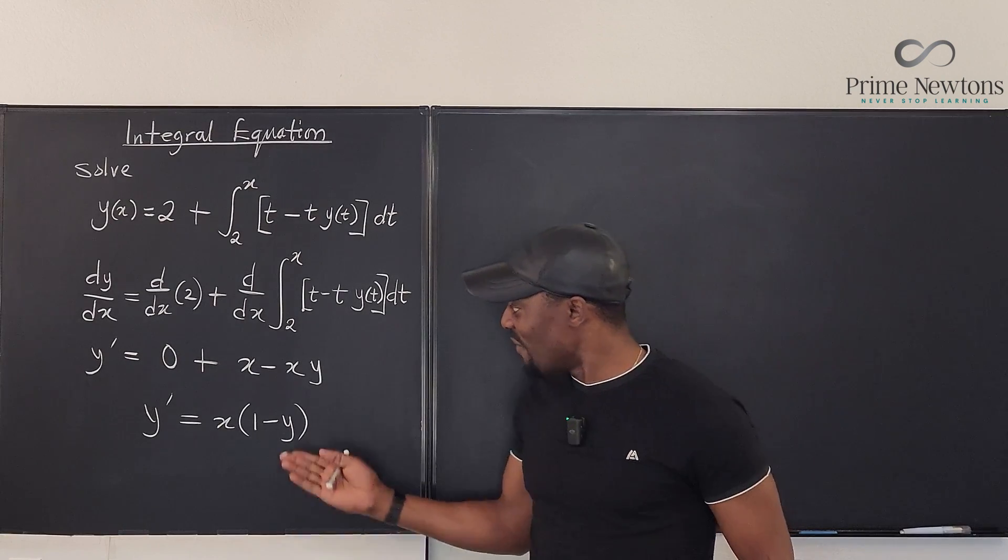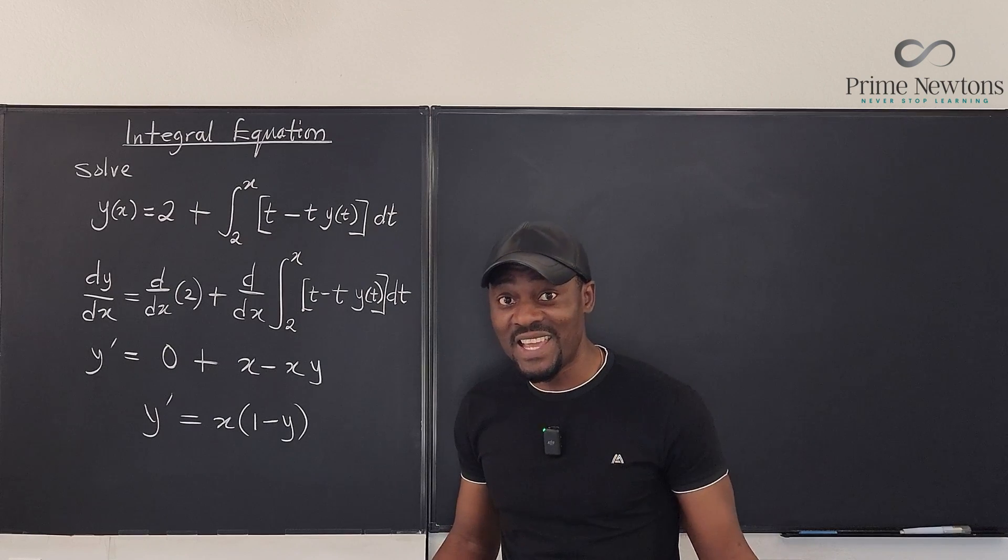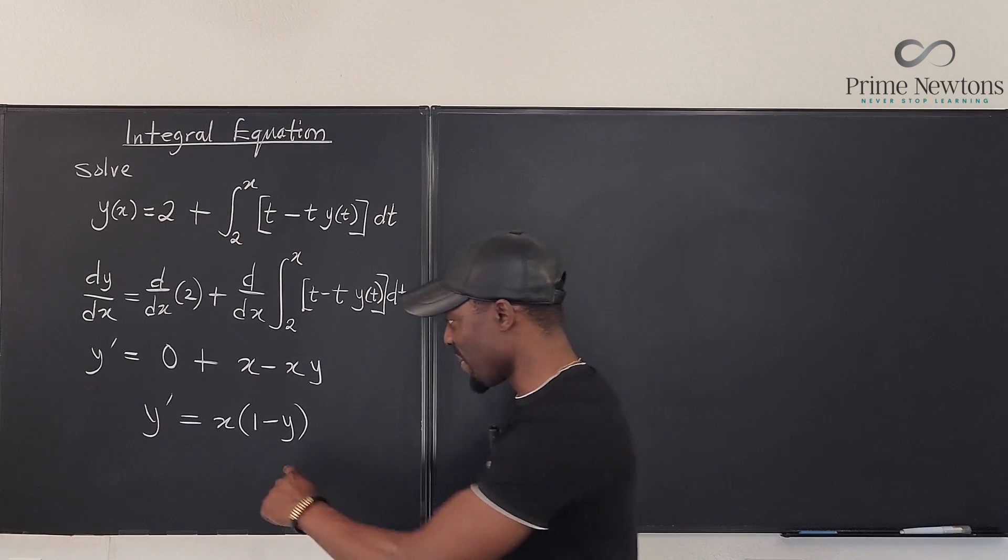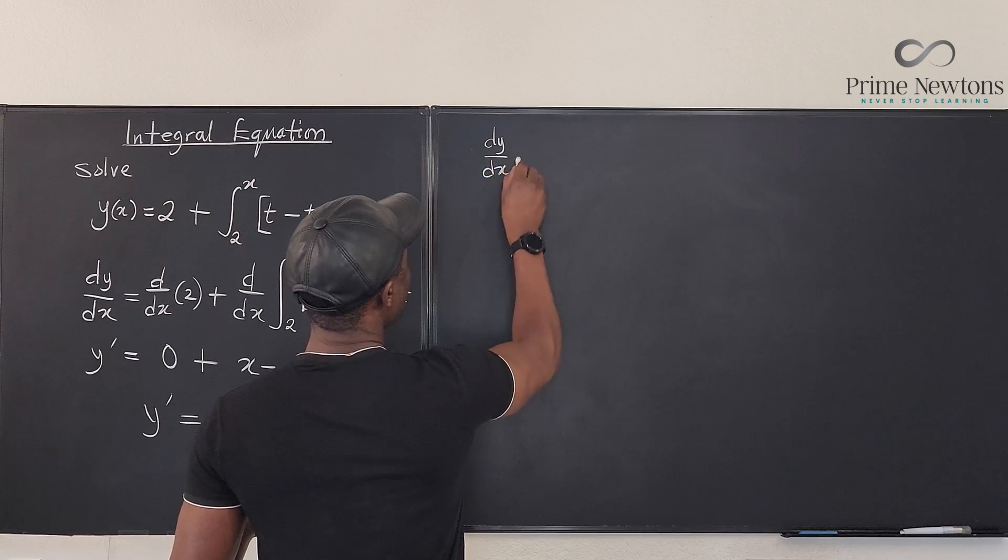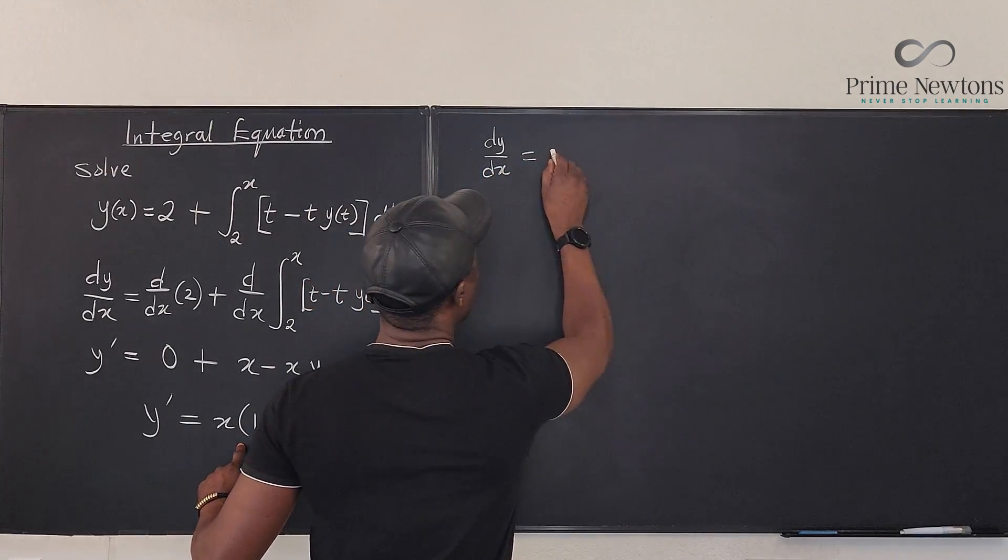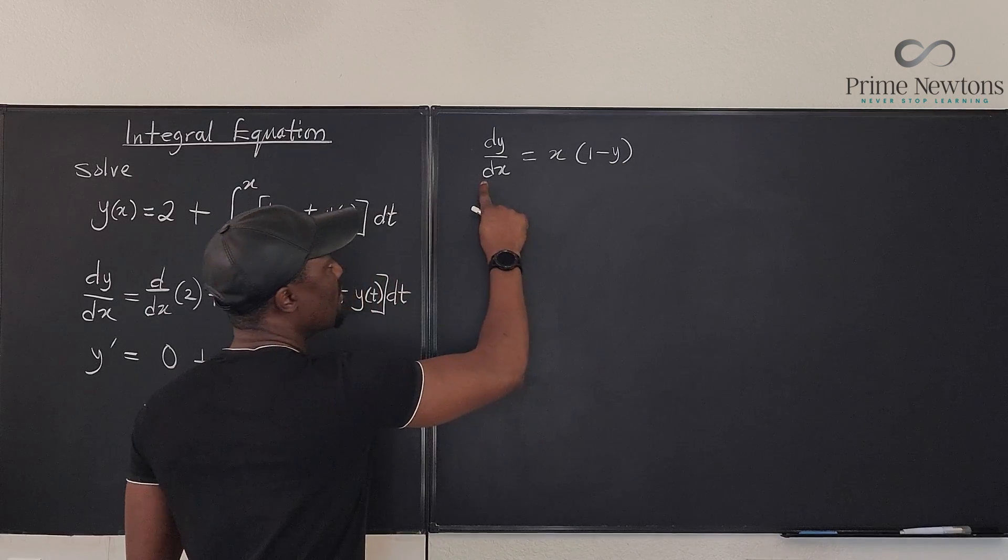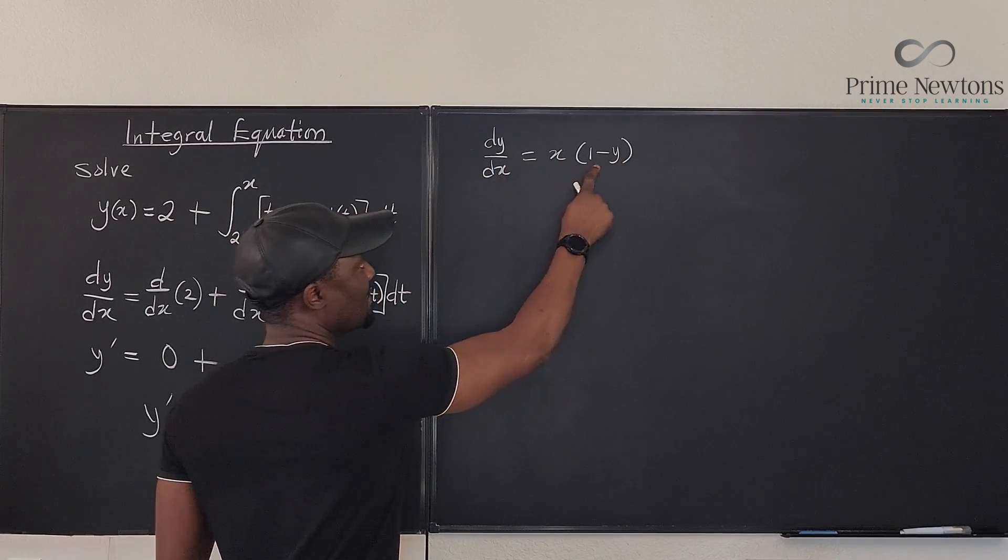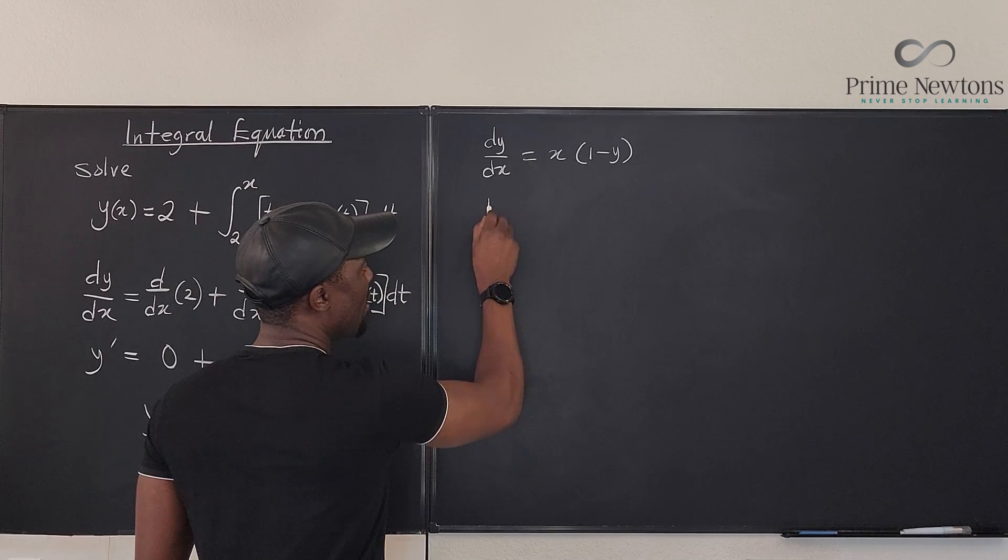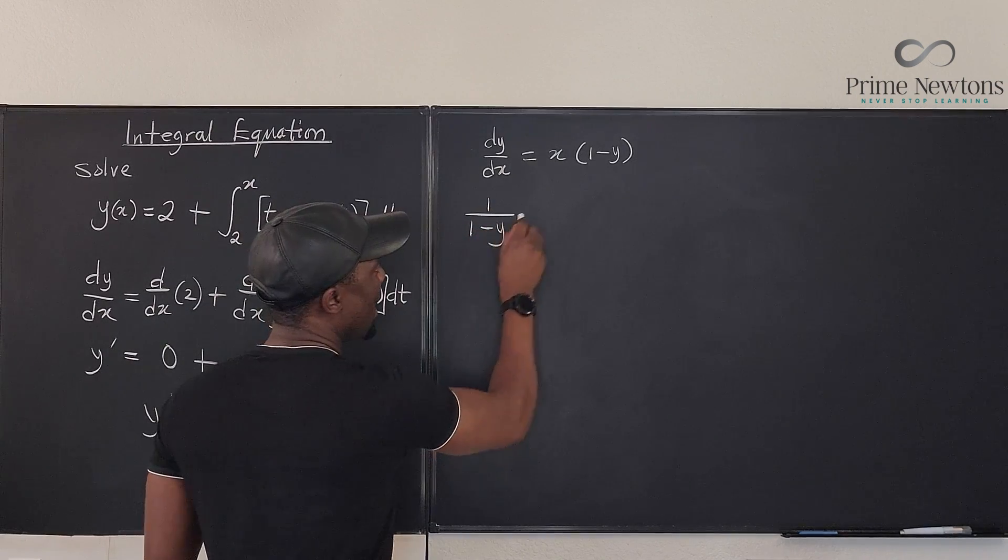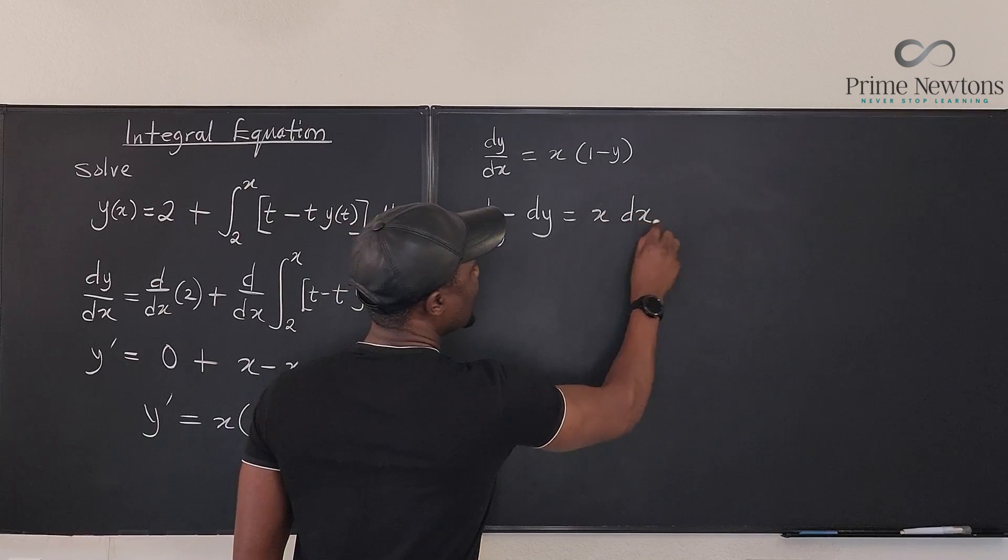So what do you do? Now, this is a differential equation that can easily separate and then take the integral of both sides. So what we do here, we say that dy/dx is equal to x times (1 - y). So I'm going to multiply both sides by dx and divide both sides by (1 - y). I'm going to have 1/(1 - y) dy equals x dx.